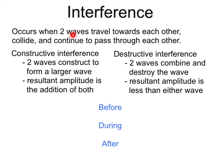Interference. This occurs when two waves traveling towards each other collide and then continue to pass through each other. There are two types of interference: constructive interference and destructive interference.